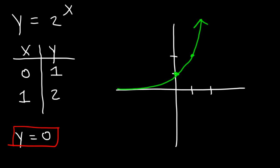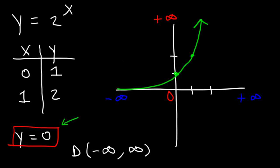Now, what is the domain of the function and what is the range? The domain has to do with x values — the lowest x value is negative infinity and the highest is infinity. So for all exponential functions, the domain will be all real numbers. The range is limited by the horizontal asymptote. The lowest y value is zero and the highest is infinity, so the range is from zero to infinity, but it does not include zero. The graph never touches the horizontal asymptote — it gets very close but never touches it. There's no value you can plug in for x that will give you a y value of zero.